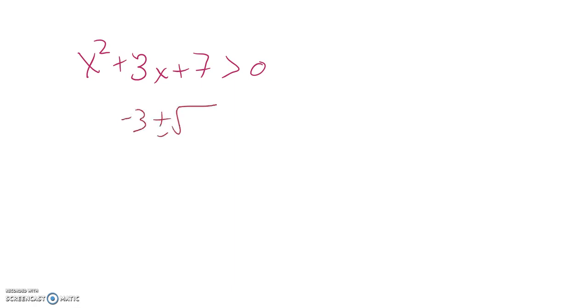Negative b plus or minus the square root of b squared minus 4 times a times c all over 2 times a. So negative 3 plus or minus square root, 3 squared is 9, 4 times 1 times 7, 28 and negative.